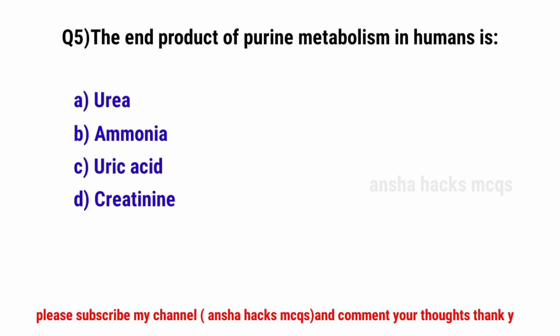Question No. 5. The end product of purine metabolism in humans is — the correct option is C: Uric acid.